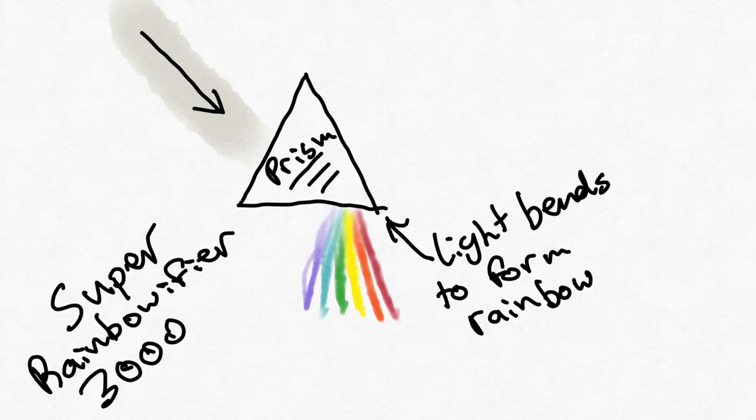Glass can bend light. You should know this, otherwise your 8th grade science teacher would be very disappointed. Concave and convex lenses are used in glasses.